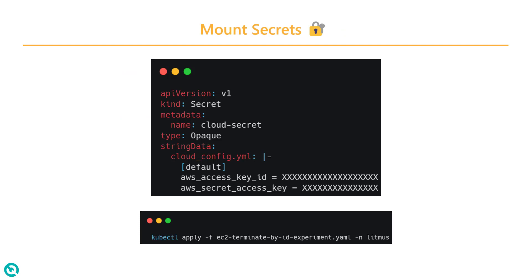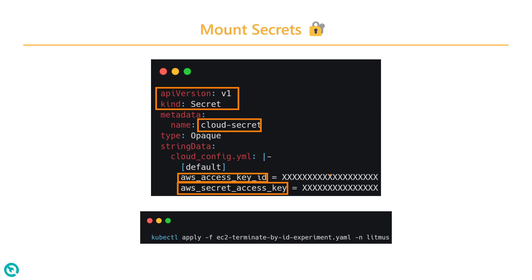To make sure your litmus namespace has access to your EC2 resource, you have to create a secret. The kind is Secret, which is the Kubernetes object, and the name is 'cloud-secret' by default. Inside this cloud secret, you are going to pass two variables: access key ID and secret access key. This will come from your AWS account, and then you have to apply this particular YAML to the default namespace, which is litmus.